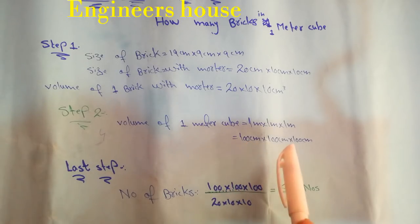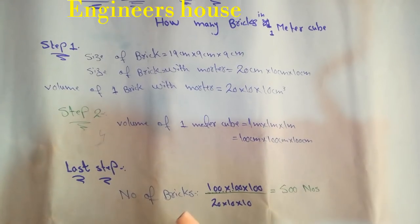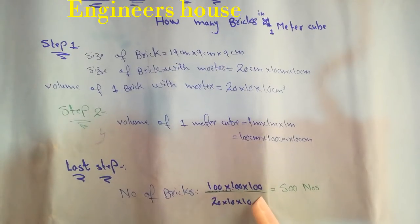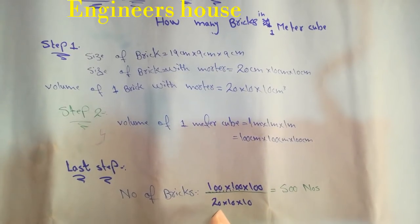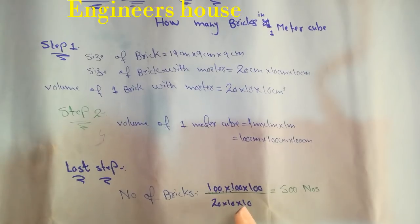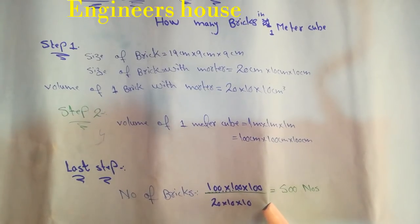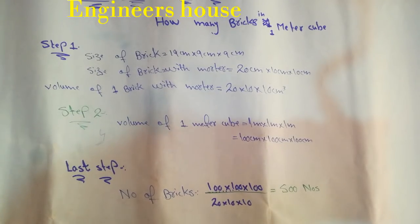Last step: Number of bricks is equal to 100 by 100 by 100 divided by 20 by 10 by 10, which is equal to 500 numbers. Okay, thanks for watching my video.